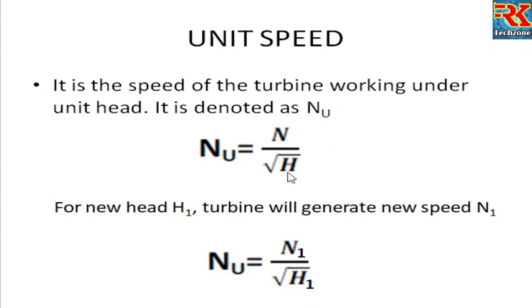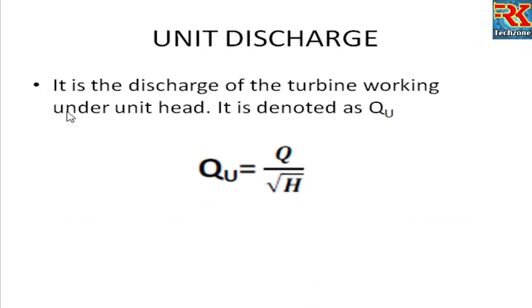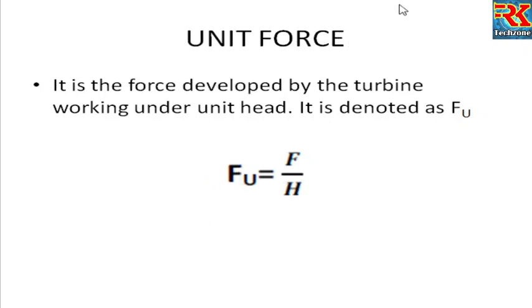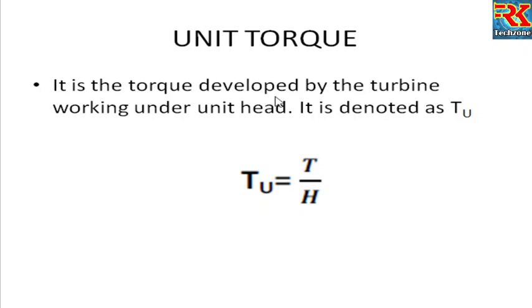The unit speed is Nu = N / √H, and unit discharge Qu = Q / √H — it is the discharge of a turbine working under unit head. These follow the same form. If we change the head, we can control the discharge using Qu. Unit power is the power delivered by a turbine working under unit head, denoted as Pu. Unit torque Tu = T / H.